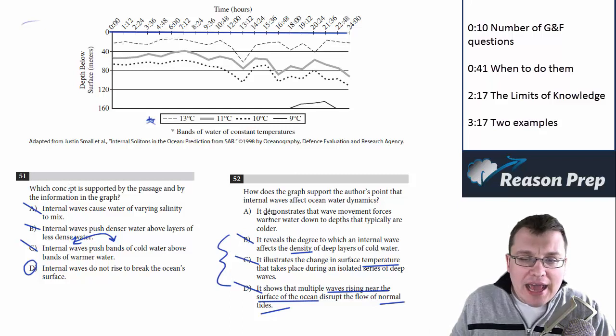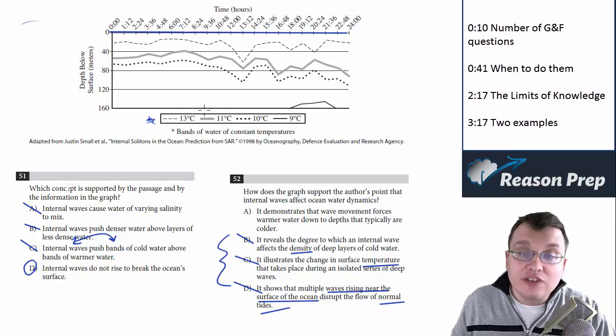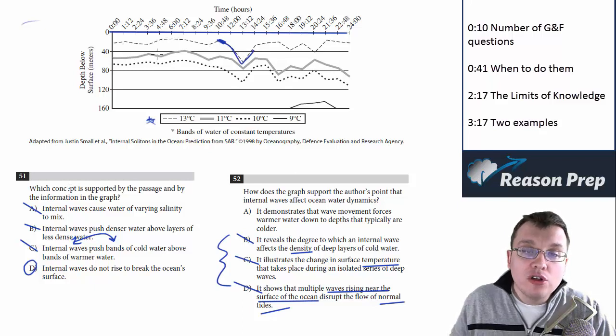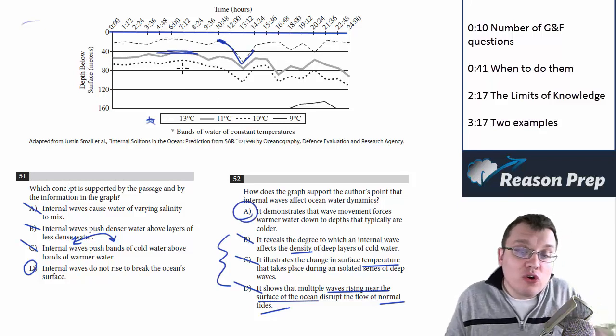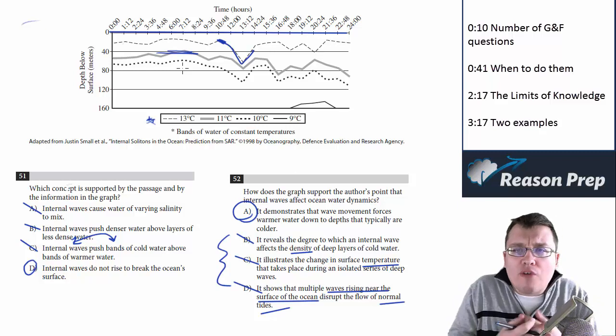Now, what about A? 'It demonstrates that wave movement forces warmer water down to depths that are typically colder.' And again, this makes sense. We're talking about temperature. We can see this warmer water, like the 13 degree level, getting pushed down to the level where the 11 degree water typically is. So A is directly supported by the passage, and it's something that you can also infer or figure out from the passage and from the graph.